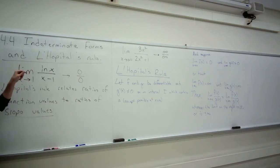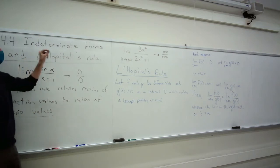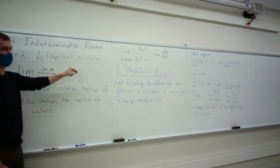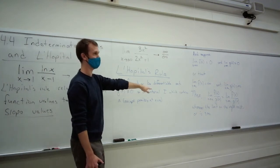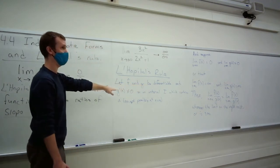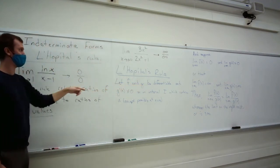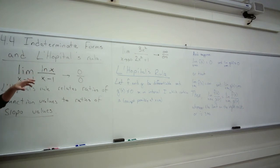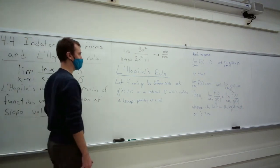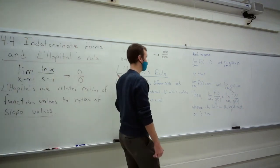So let's use this as a first example. Let's make sure this function and this function satisfy L'Hôpital's rule's conditions, then we'll take the derivatives and see if we can find that limit. If we can't, we'll do this iteratively — apply L'Hôpital's rule again and again until we either find the original limit or find something that doesn't exist.